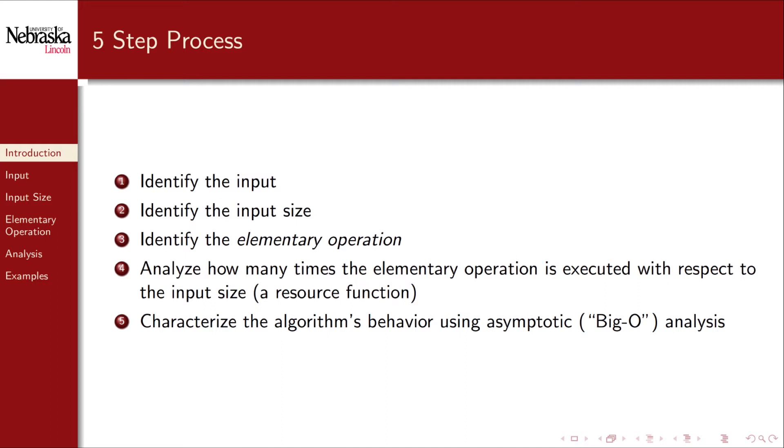The first step is to identify the input. The second step is to identify the size of the input. Next you identify an elementary operation that you want to analyze the algorithm with respect to. The fourth step is to analyze the algorithm to determine how many times the elementary operation is performed with respect to the input size. Finally you characterize this using asymptotic analysis. In this video we'll cover each of the first four steps in detail, saving the fifth and final step for a subsequent video as it's a major topic in and of itself.